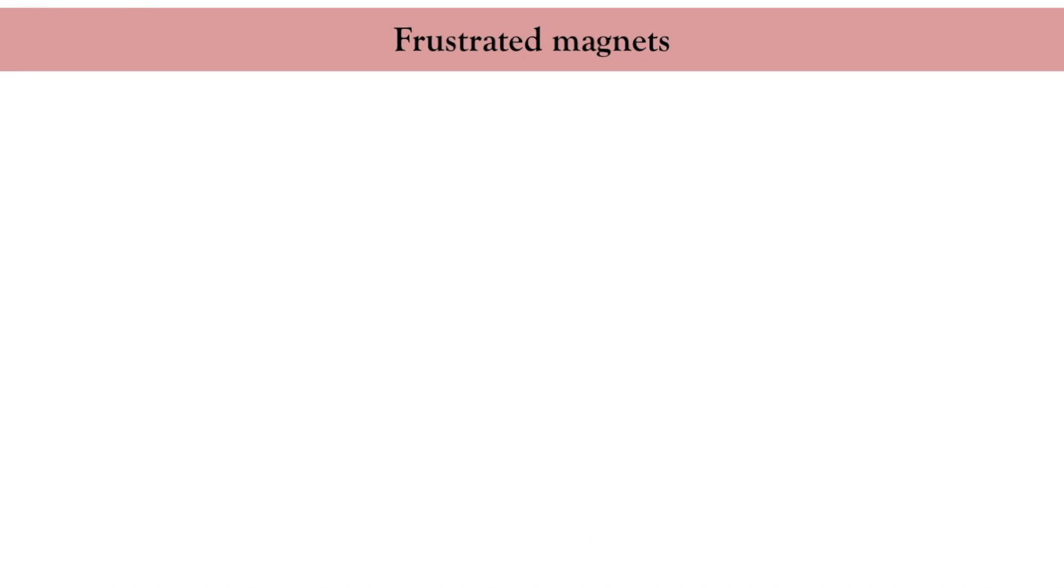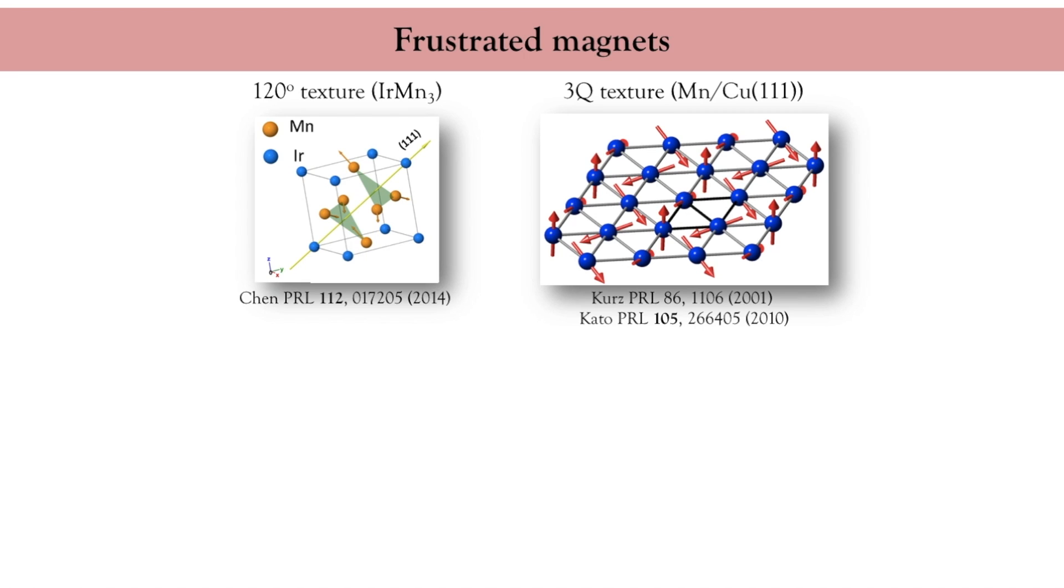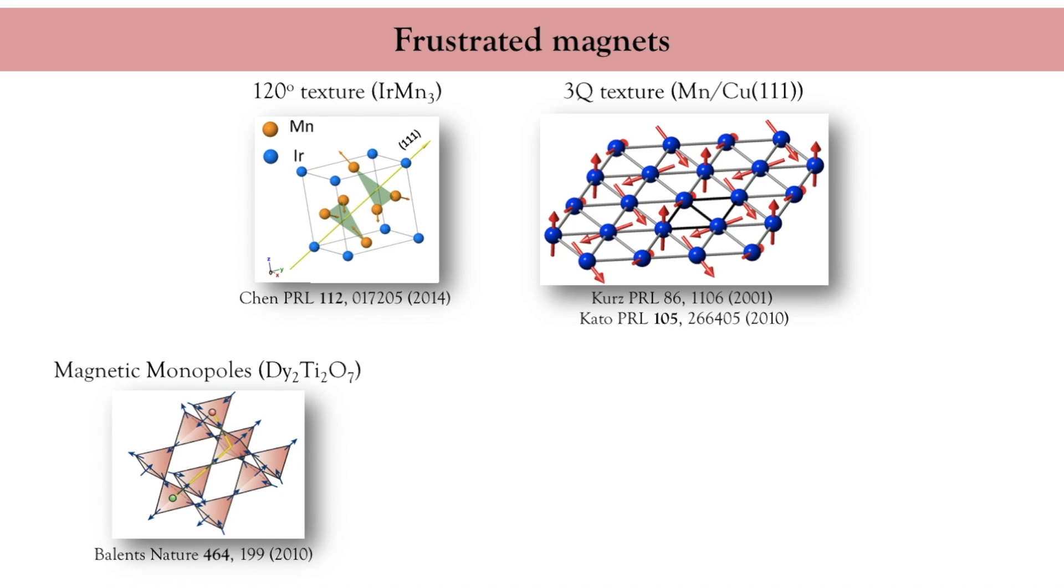Here are a few examples of frustrated magnets. That is to say, magnets where all interactions cannot be completely fulfilled at once. For instance, iridium manganese 3 is an anti-ferromagnet with non-collinear coplanar configuration, where the spins form an angle of 120 degrees with each other. More complex textures, called 3Q textures, can be found in two or three dimensions. For instance, the example I give here is the configuration you get when you deposit a monolayer of manganese over copper 111. You can also obtain this configuration in three dimensions in gamma iron manganese.